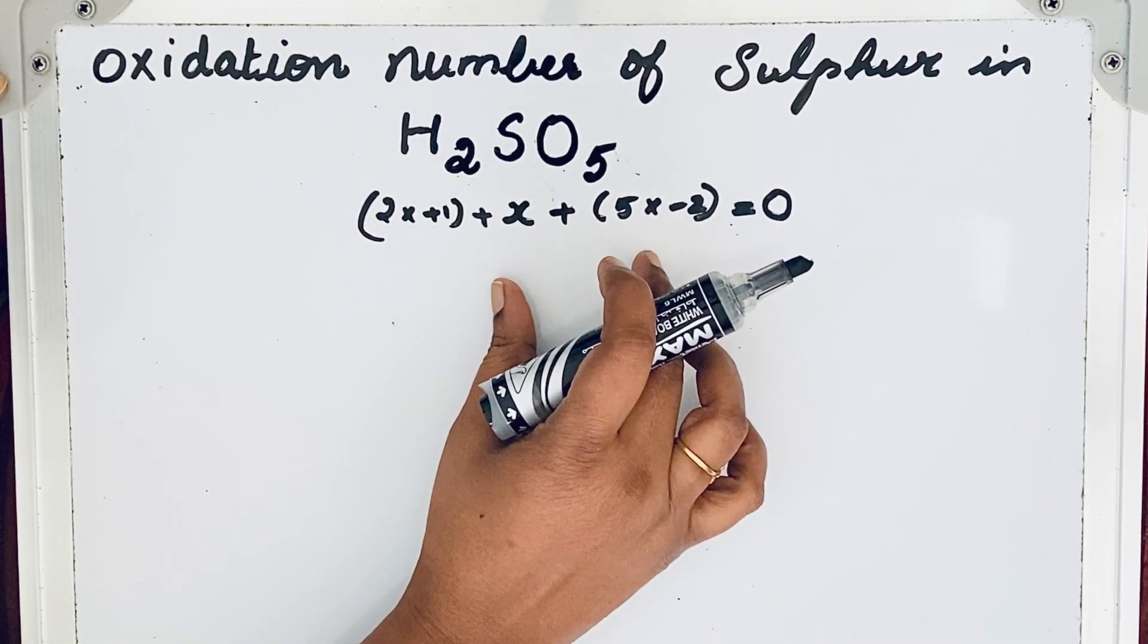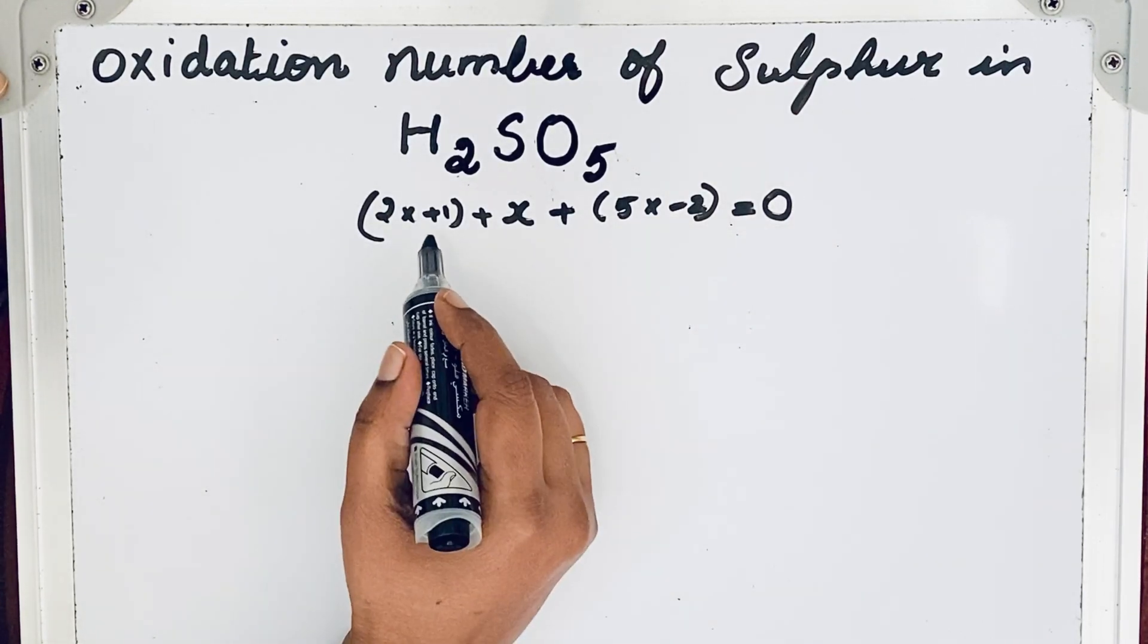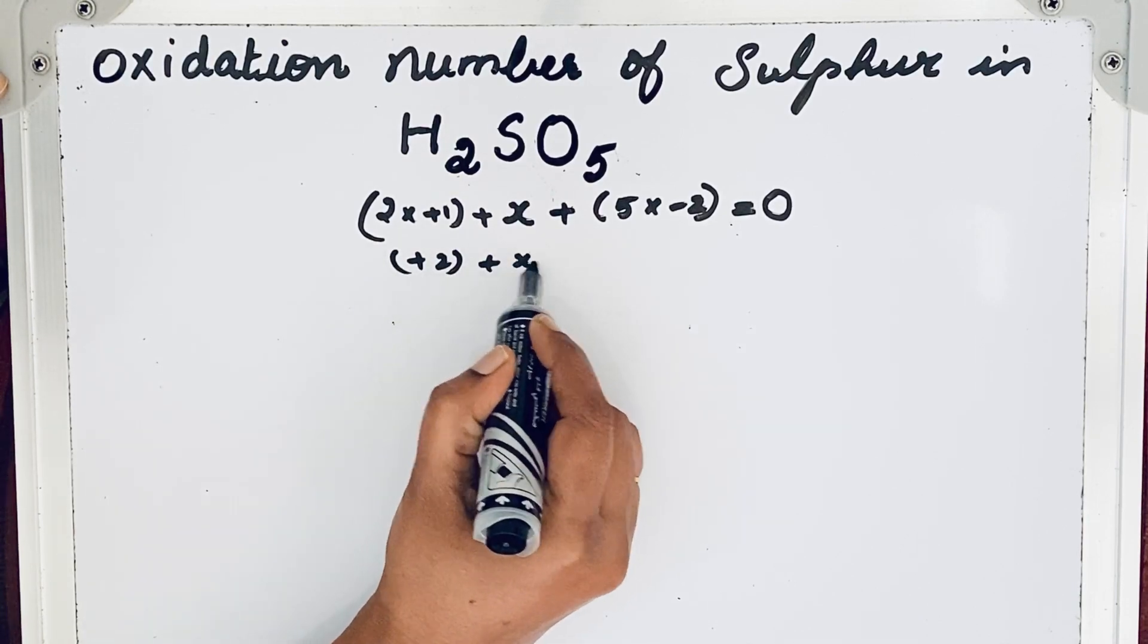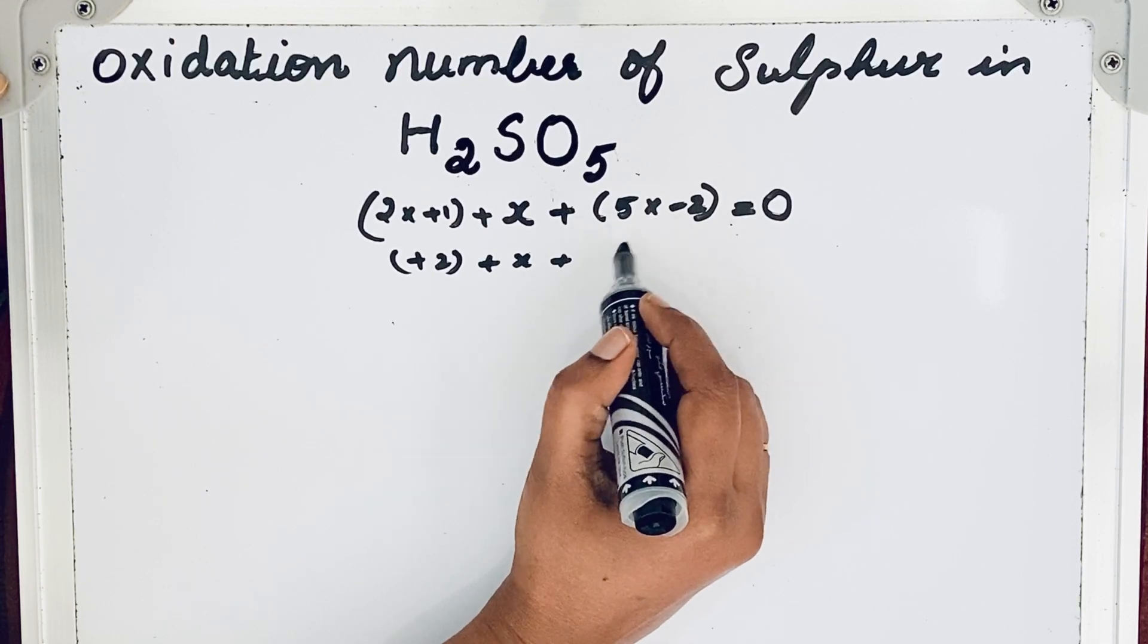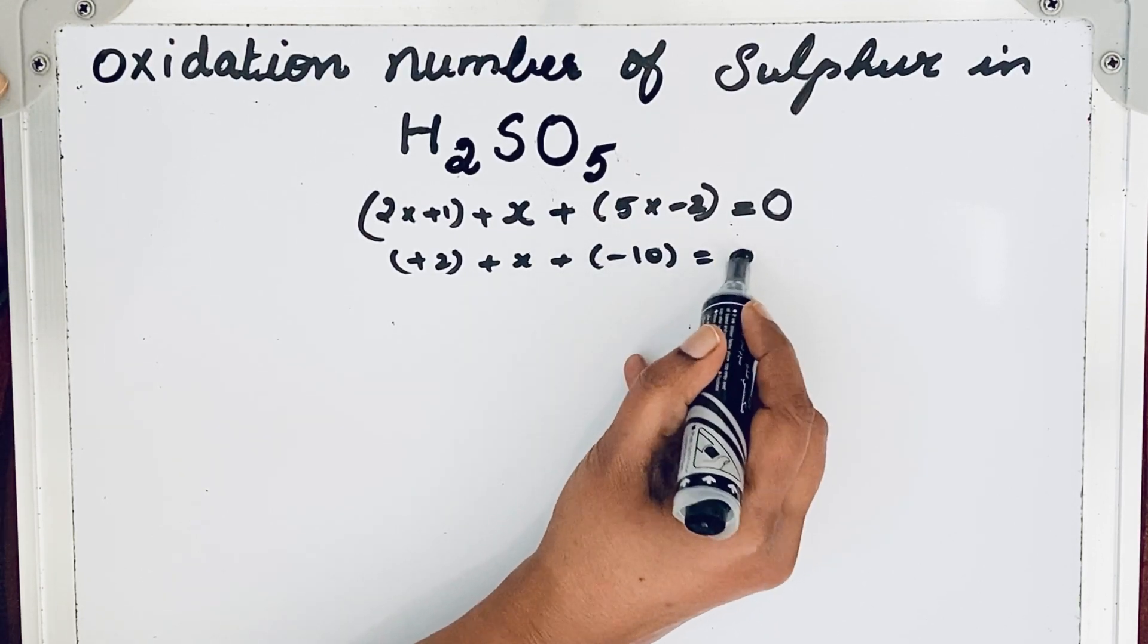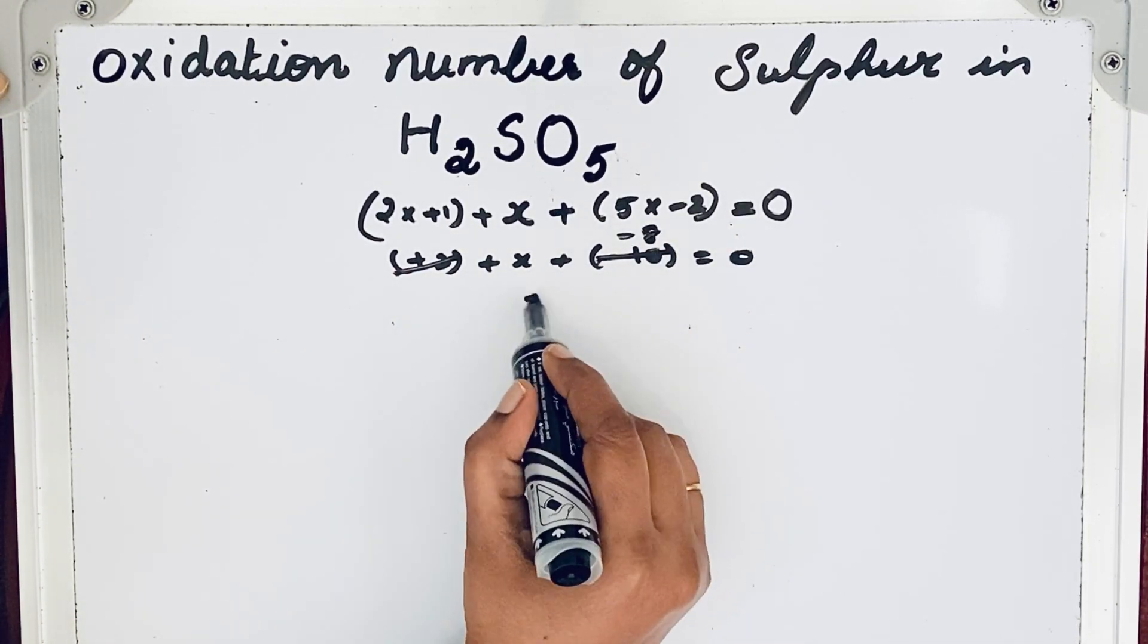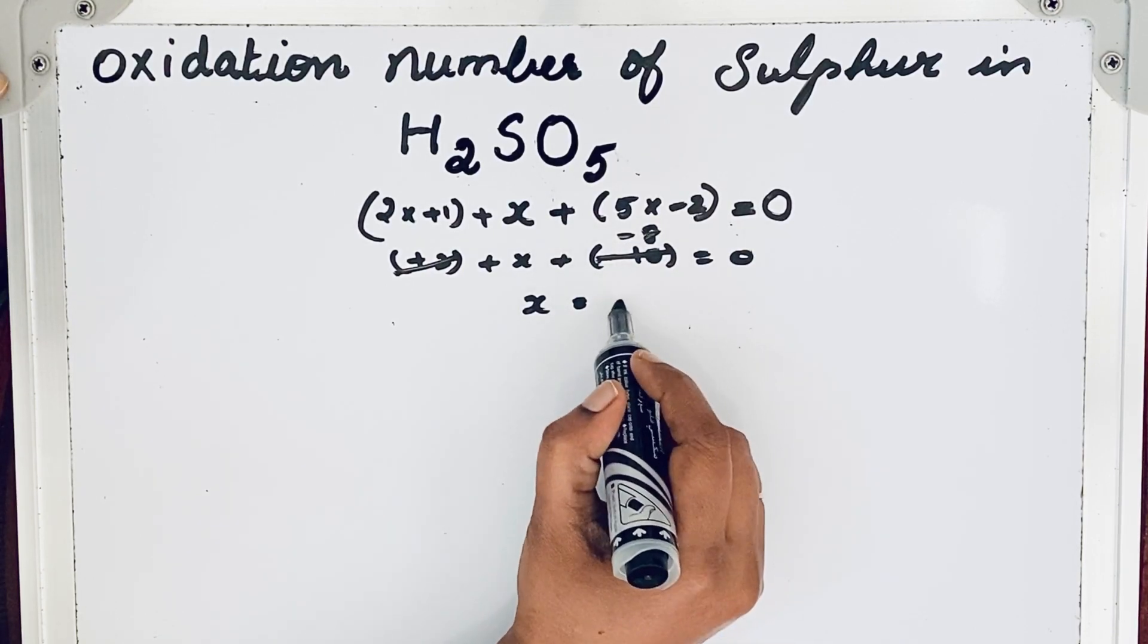Now let us solve. So plus 2, then x plus 5 into minus 2. Multiply minus 2, minus 10, so is equal to 0. So we can cancel it, minus 8. If you solve this, minus 8 when it goes to that side we will get plus 8.